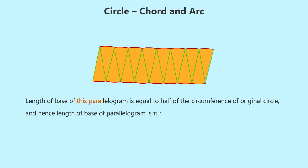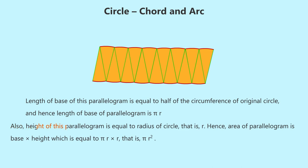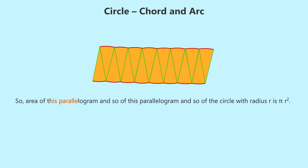The length of the base of this parallelogram is equal to half of the circumference of the original circle, and hence the length of base of the parallelogram is πr. Also, the height of this parallelogram is equal to the radius of the circle, that is r. Hence, the area of the parallelogram is base times height, which is equal to π × r × r, that is πr². So the area of this parallelogram and so of the circle with radius r is πr².